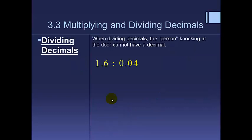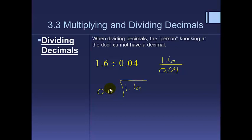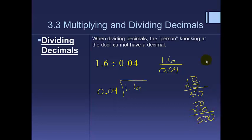When dividing, I like to say the number you're dividing by — the divisor — cannot have a decimal. Think of it as a fraction: 1.6 is being divided by 0.04. We can't have a decimal in the denominator, so we need to move it. Every time you multiply by 10, the decimal shifts one place right — for example, 5 times 10 is 50, 50 times 10 is 500. Each multiplication by 10 adds a zero.